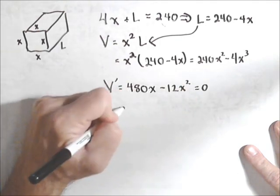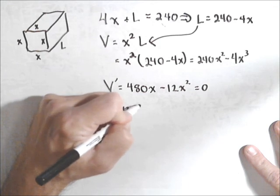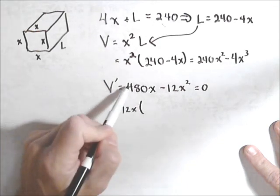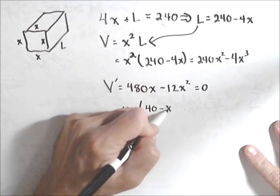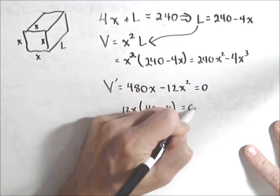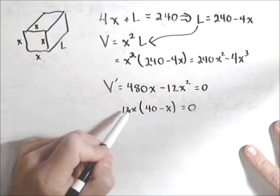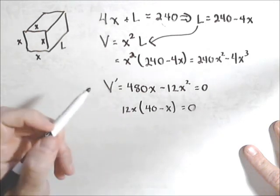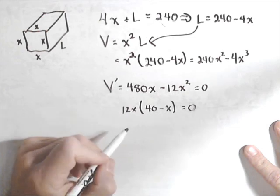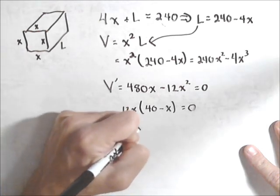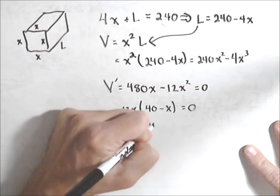And we can factor out a 12x. And if we factor out a 12x, we get times 40 minus x equals zero. So we get two values for x. We're going to get zero, which would leave us with no box. And we're going to get 40. So the value we're interested in is x equals 40.